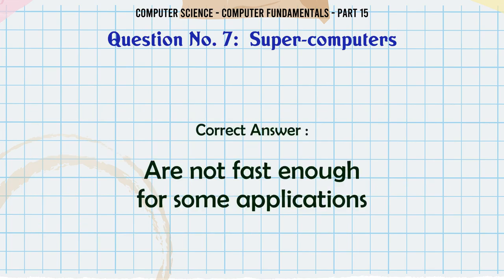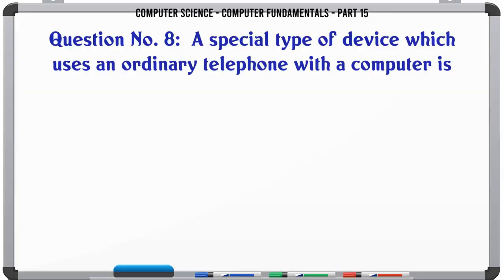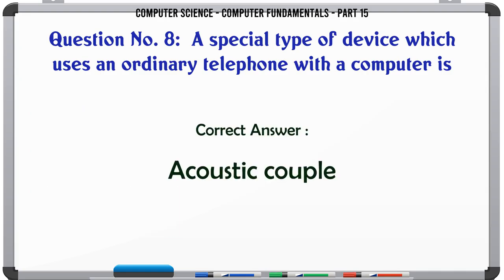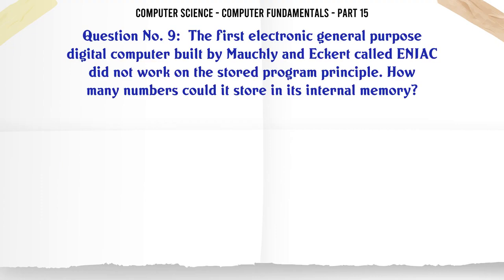A special type of device which uses an ordinary telephone with a computer is: A. Light pen B. Mouse C. Acoustic coupler D. Touch panel. The correct answer is Acoustic coupler.